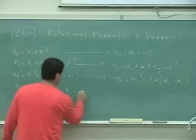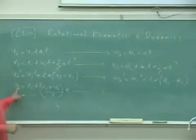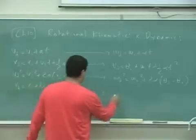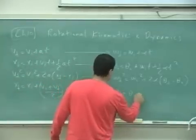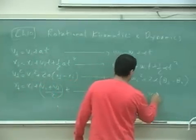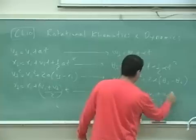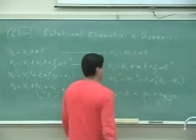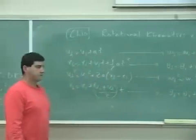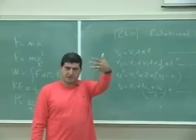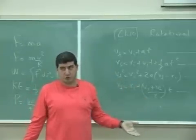you have omega final squared is omega initial squared plus 2 alpha theta final minus theta initial. And then over here, theta final is theta initial plus omega initial plus omega final over 2 times t.